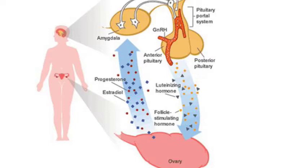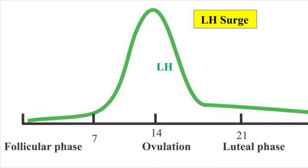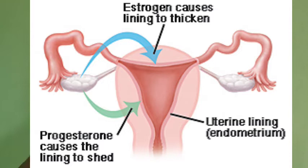Ovulation typically occurs around 14 days before your next menstrual period. The ovulation process begins with your body's release of follicle-stimulating hormone. This hormone helps the egg inside your ovary to mature in preparation for release. Once the egg is matured, the body releases a surge of luteinizing hormone, triggering the egg's release. The luteinizing hormone also stimulates the production of estrogen and progesterone from the ovary.